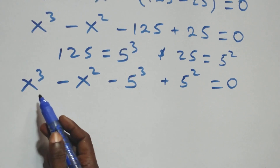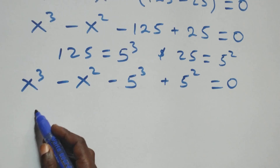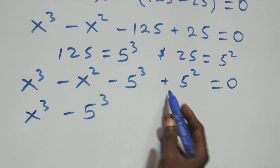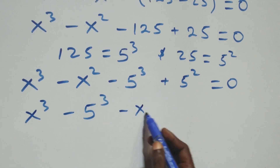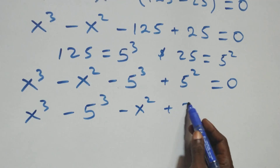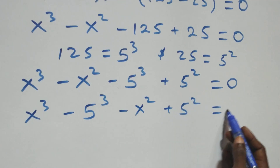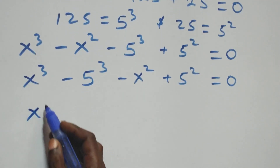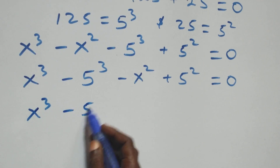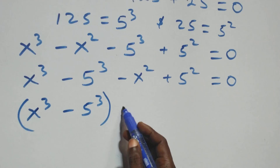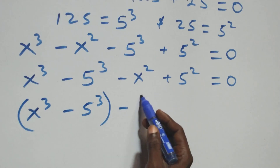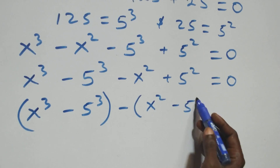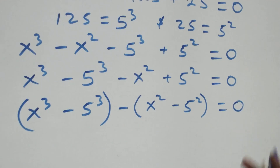The next step: let's bring the powers of 3 together — we have x cubed minus 5 cubed — and also bring the powers of 2 together — we have minus x squared plus 5 squared. We can write this as (x cubed minus 5 cubed) minus (x squared minus 5 squared) equals zero.